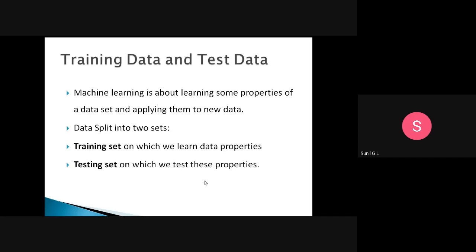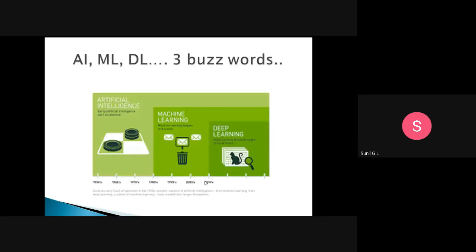In machine learning, we have two things: training data and test data. Whenever a machine learns, we need to train the system such that the training data is used — this is the data used to train the system. Then, to check whether the system is performing correctly or not, we use test data. These are the two types of data. The three important words we hear every day are: artificial intelligence, machine learning, and deep learning.